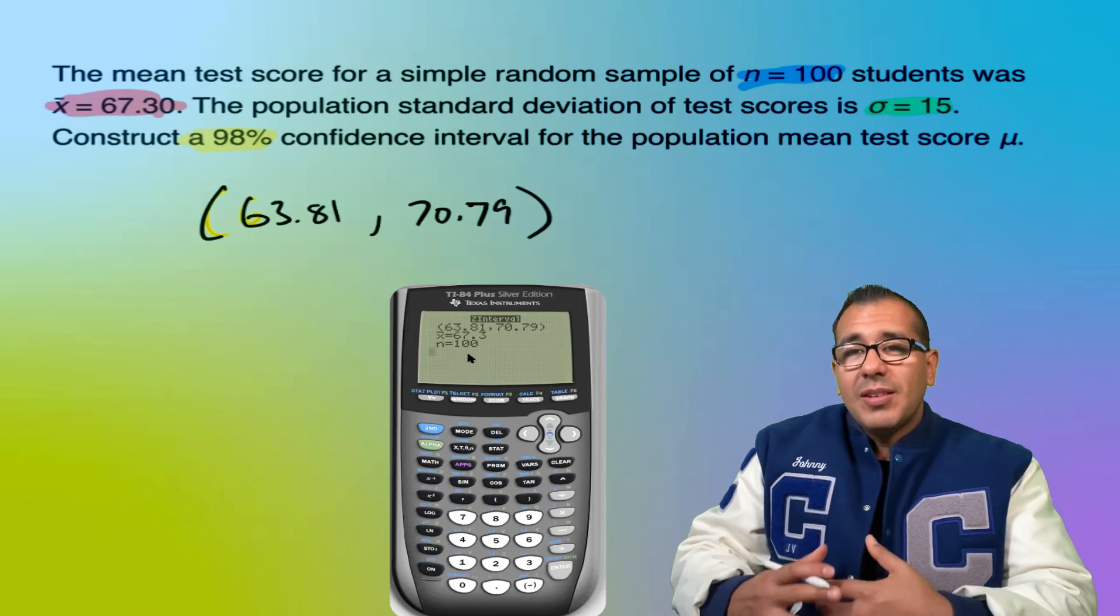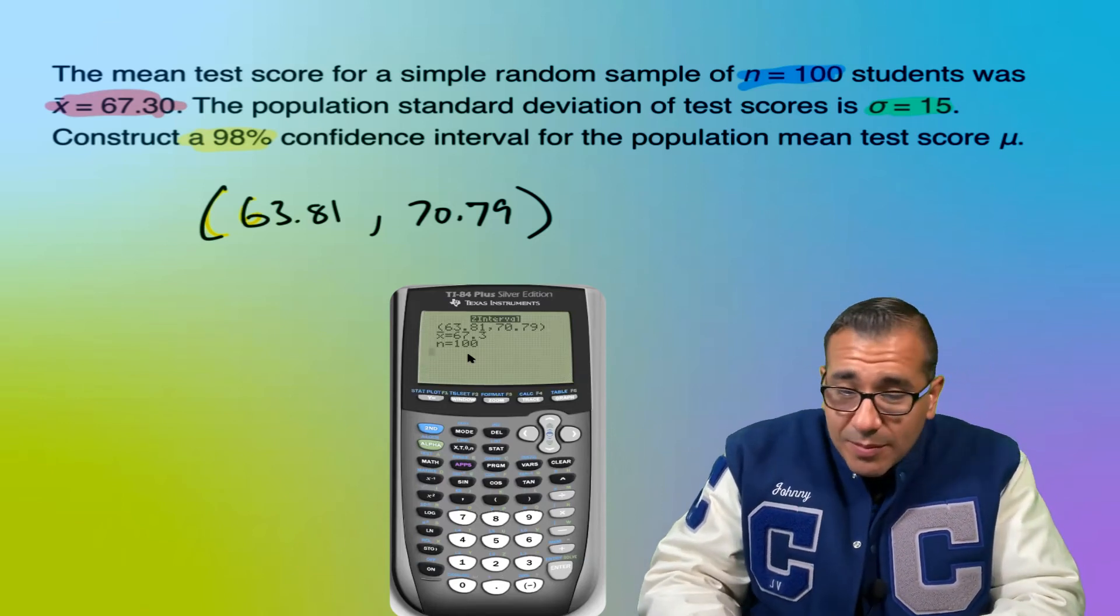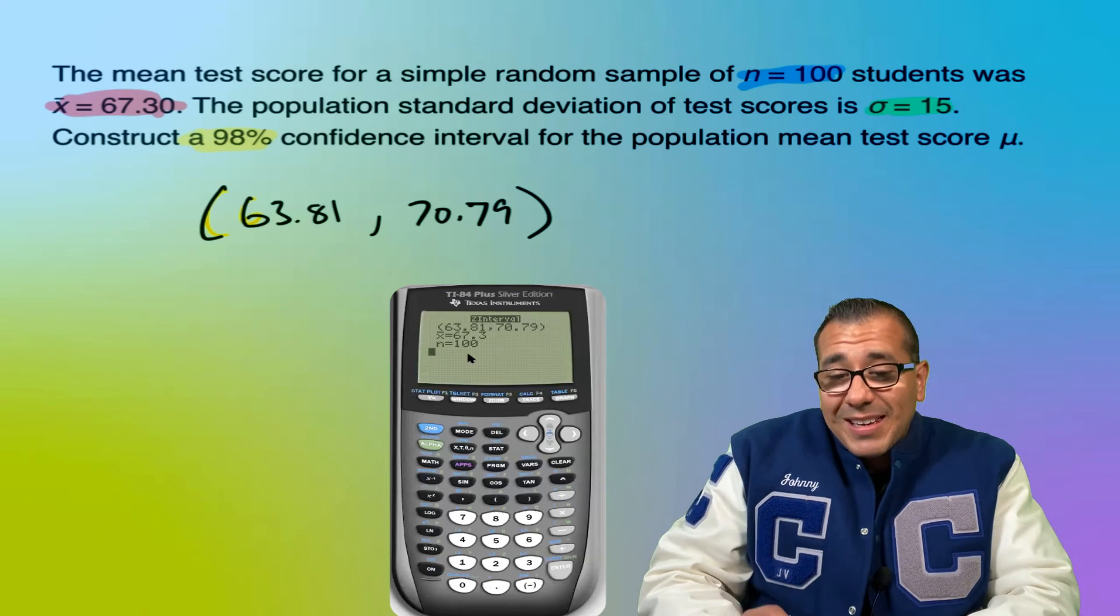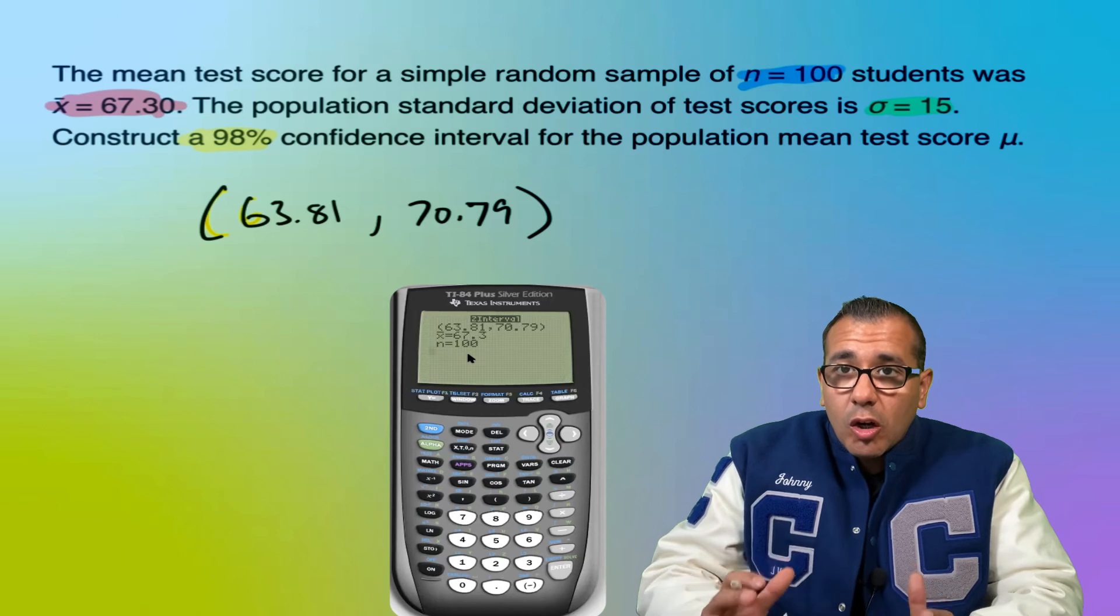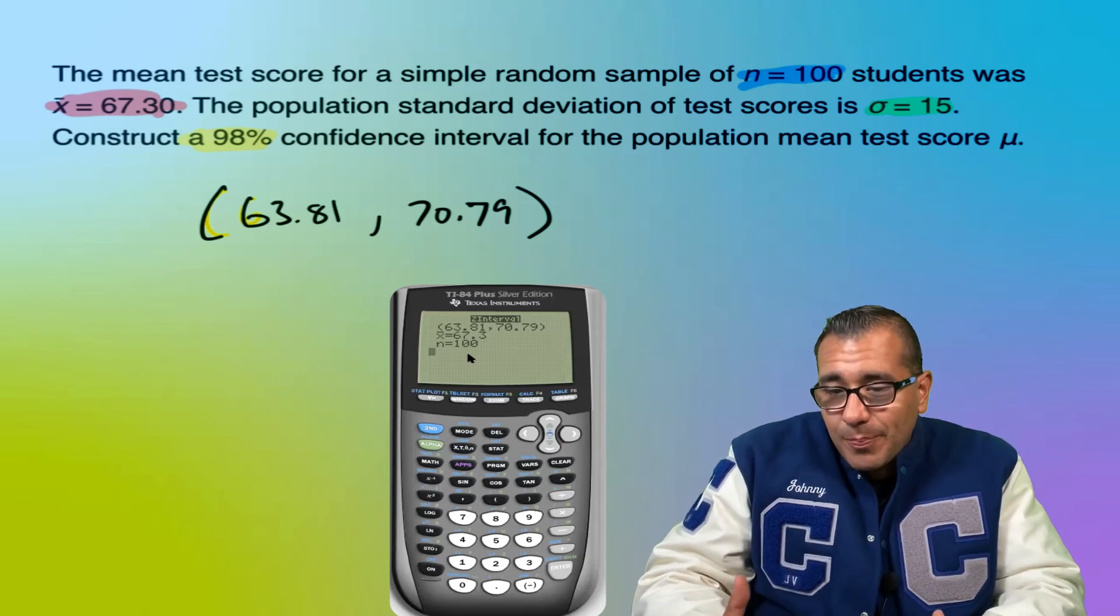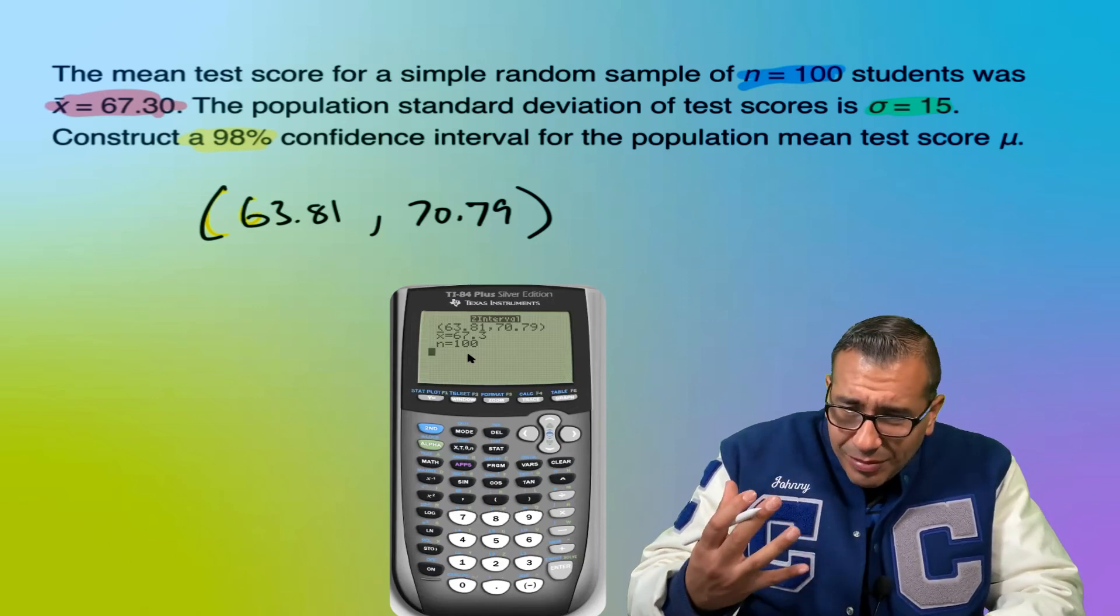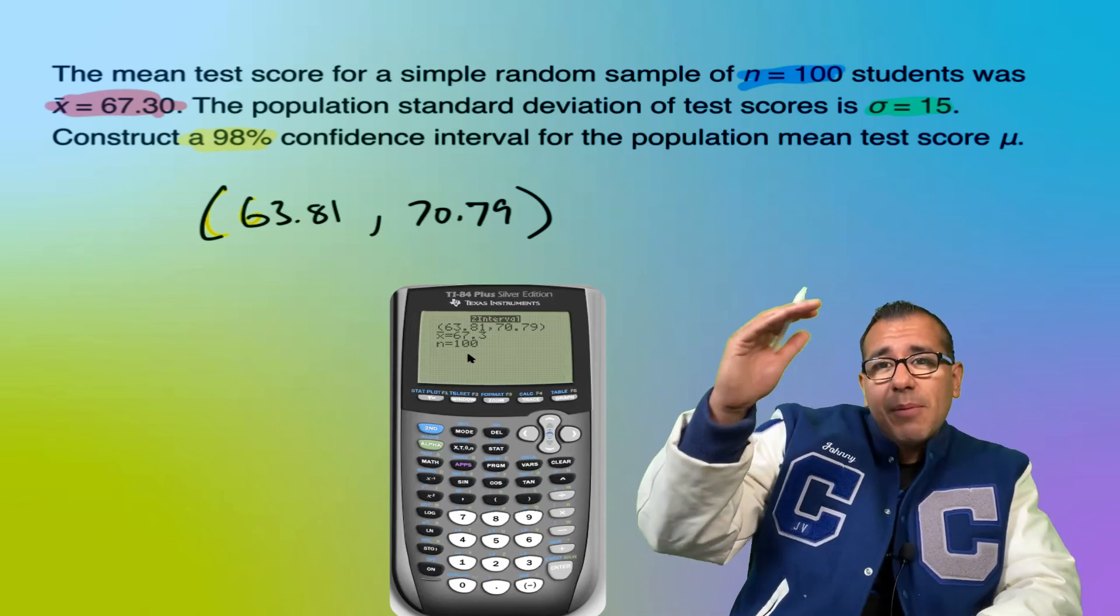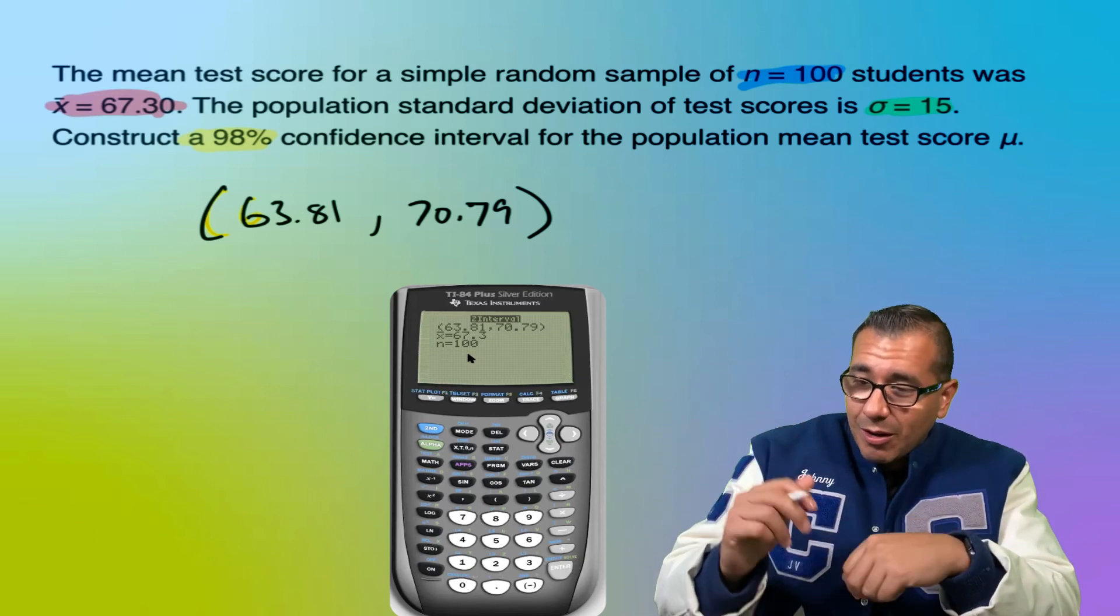So if we were to do this a bunch of times, run this experiment a bunch of times, we would see that 98% of the time, the intervals would include that true mean. Because again, we don't know the population mean. But if we were to do this enough times, we would see that 98% of those intervals that were created would actually include that mean.